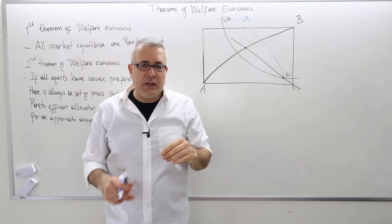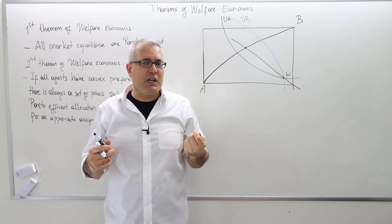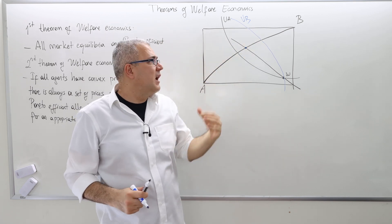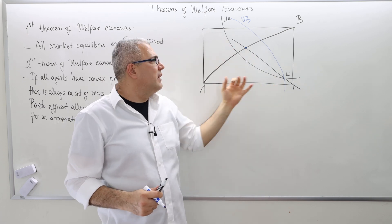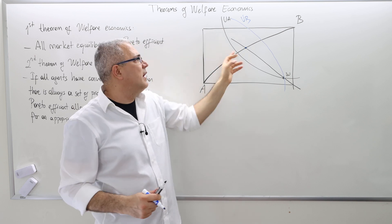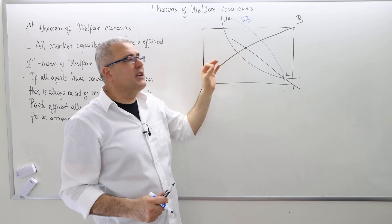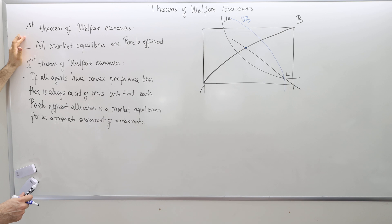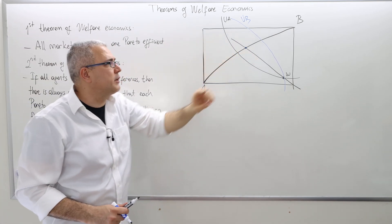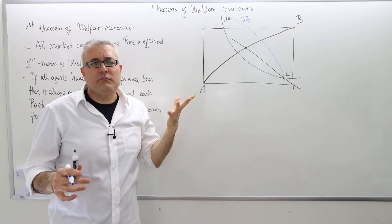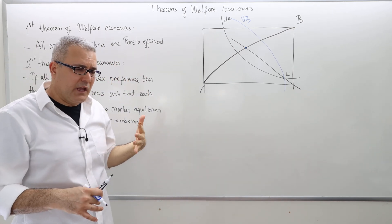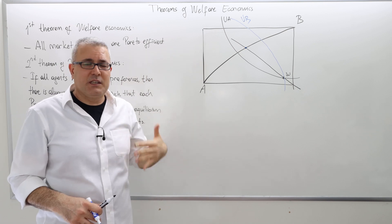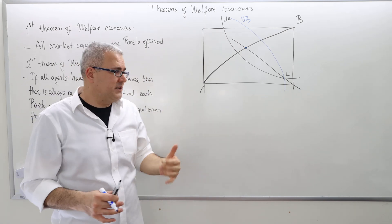Once there is no price in a pure exchange or barter economy, there are infinitely many potential candidates as outcomes of trade. However, if there is a price, it pins down one and only one allocation — and that allocation is going to be Pareto-efficient. So the market outcome is Pareto-efficient, obviously under a set of assumptions like nice utility functions and positive initial endowments.